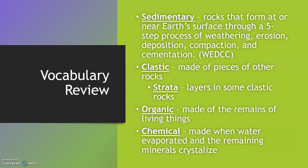Some important vocabulary from this section: Sedimentary rocks form at or near Earth's surface through a five-step process — weathering, erosion, deposition, compaction, and cementation — easy to remember as W-E-D-C-C. A clastic sedimentary rock is made of pieces of other rocks; sandstone is a clastic sedimentary rock with layers called strata. An organic sedimentary rock is made of the remains of living things and may contain fossils. A chemical sedimentary rock is made when water evaporates and the remaining minerals crystallize.